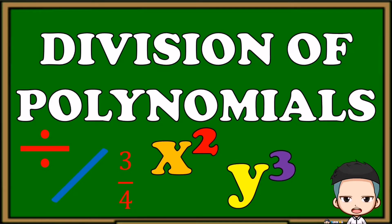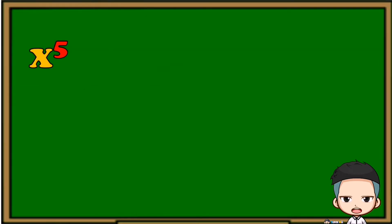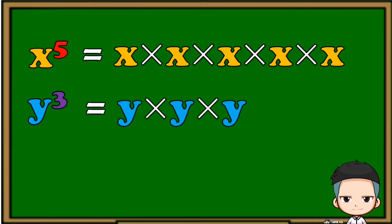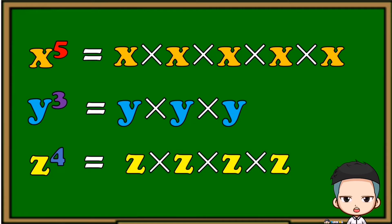Before we start, let's have a quick review about exponents. x raised to 5 is equivalent to x multiplied by itself five times. y raised to 3 is equivalent to y multiplied by itself three times. z raised to 4 is equivalent to z multiplied by itself four times.